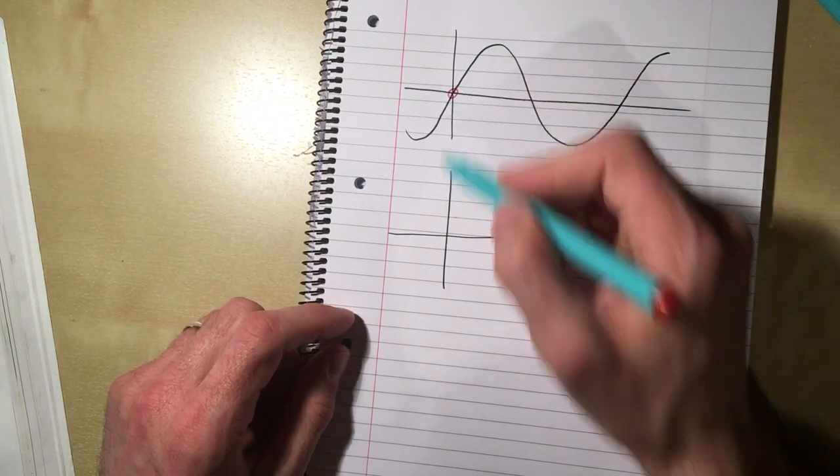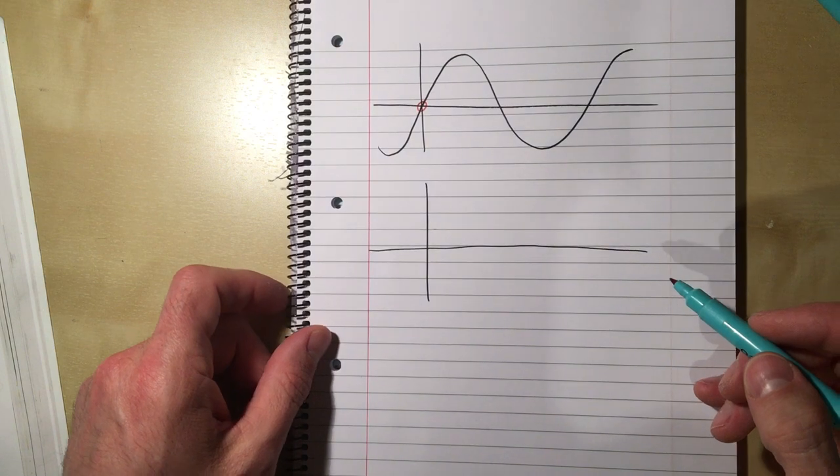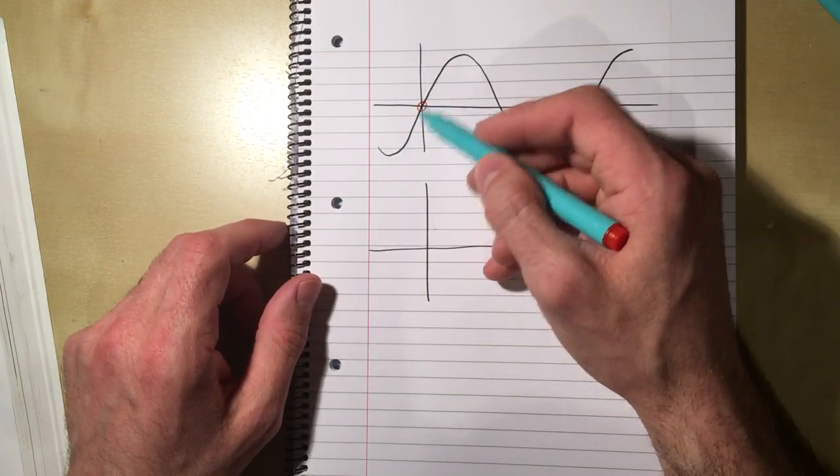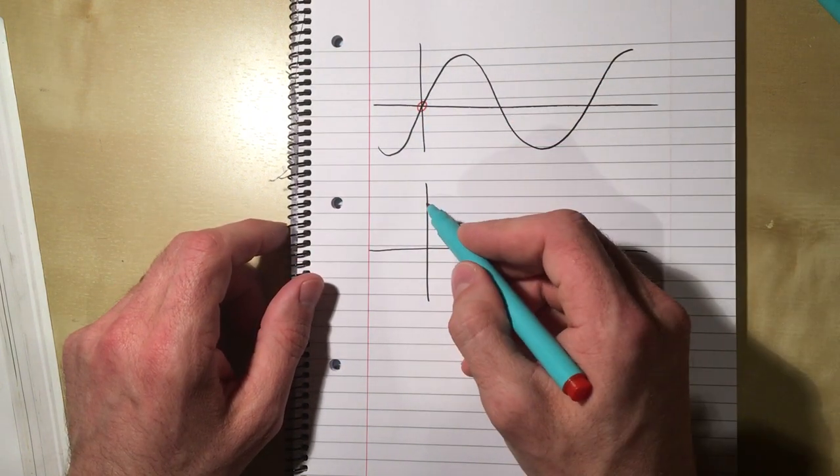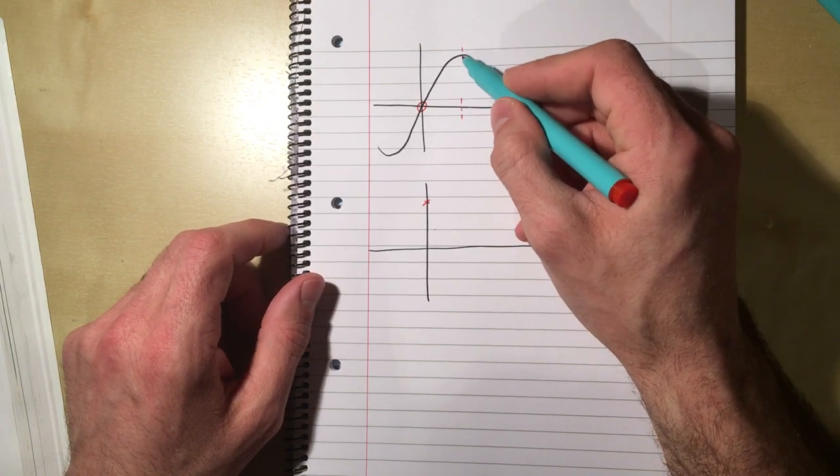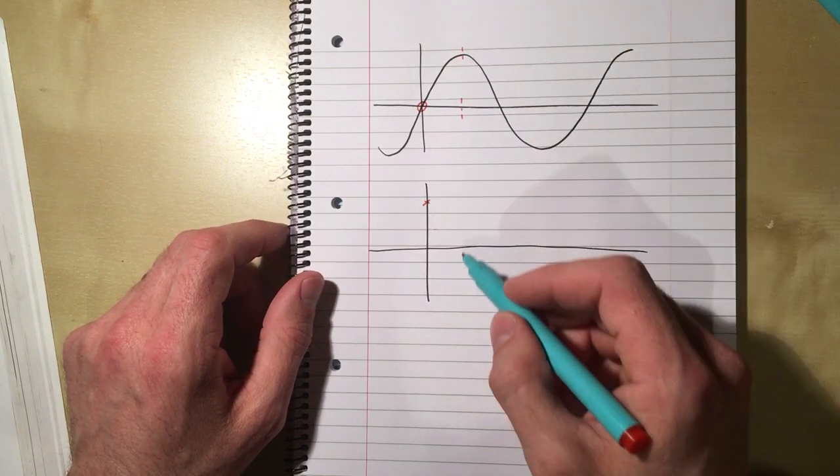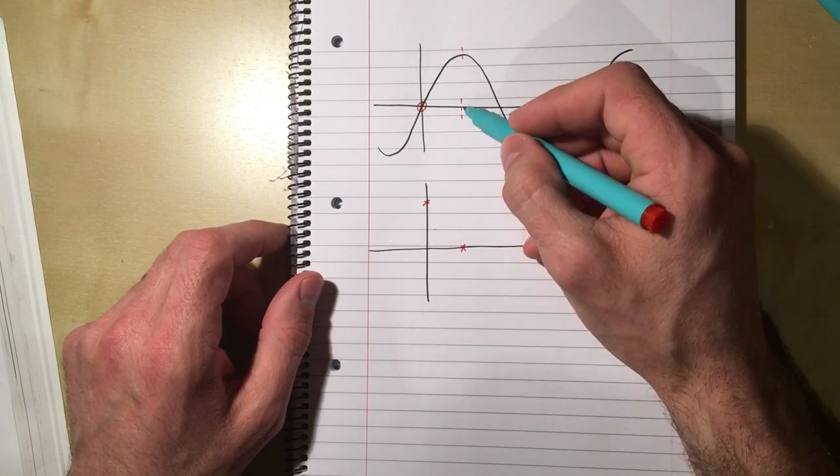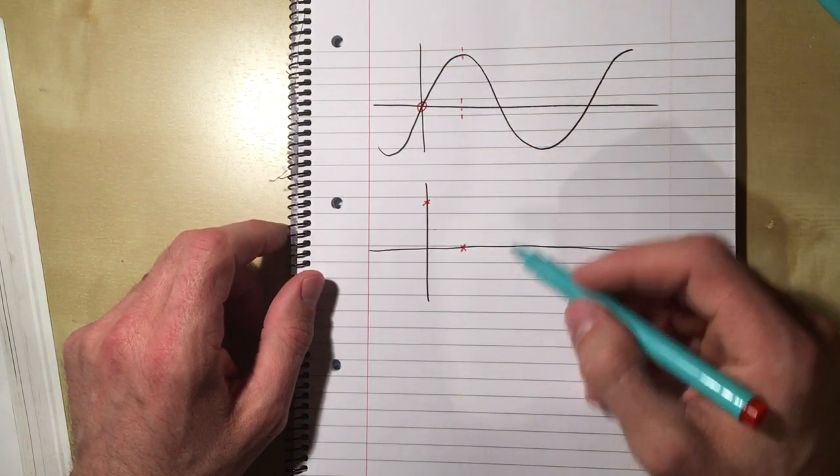Well, at this point here, when x equals 0, the gradient is as steep as it gets. It's some value and it's some steep value. At this point here, we've got a turning point, so that means the gradient has gone to 0 at that point there at 90 degrees, or at pi by 2.